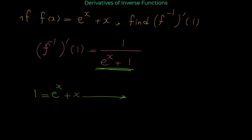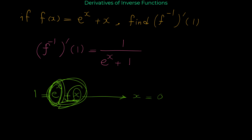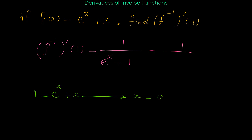Solving this equation is not easy, so try to find the x value that makes this equal 1. Look for simple numbers like 1, 0, negative 1, and so on. Solutions of these equations are usually very simple numbers. If x equals 0, then e to the 0 is 1, and 1 plus 0 equals 1. So the solution is x equals 0, and we plug 0 into the derivative.